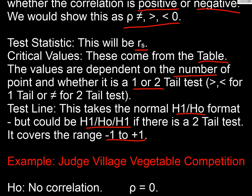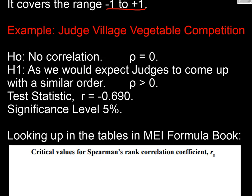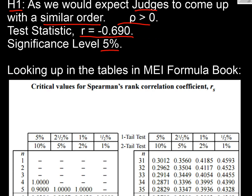So applying it to our example here, we've got H naught: no correlation, so ρ equals zero. Now H1, in context here, we would expect the judges to come up with a similar order, so we'd expect a positive correlation, so we're looking at a one-tail test. Our test statistic, we've already worked out, is -0.69. We're going to apply a significance level of five percent.